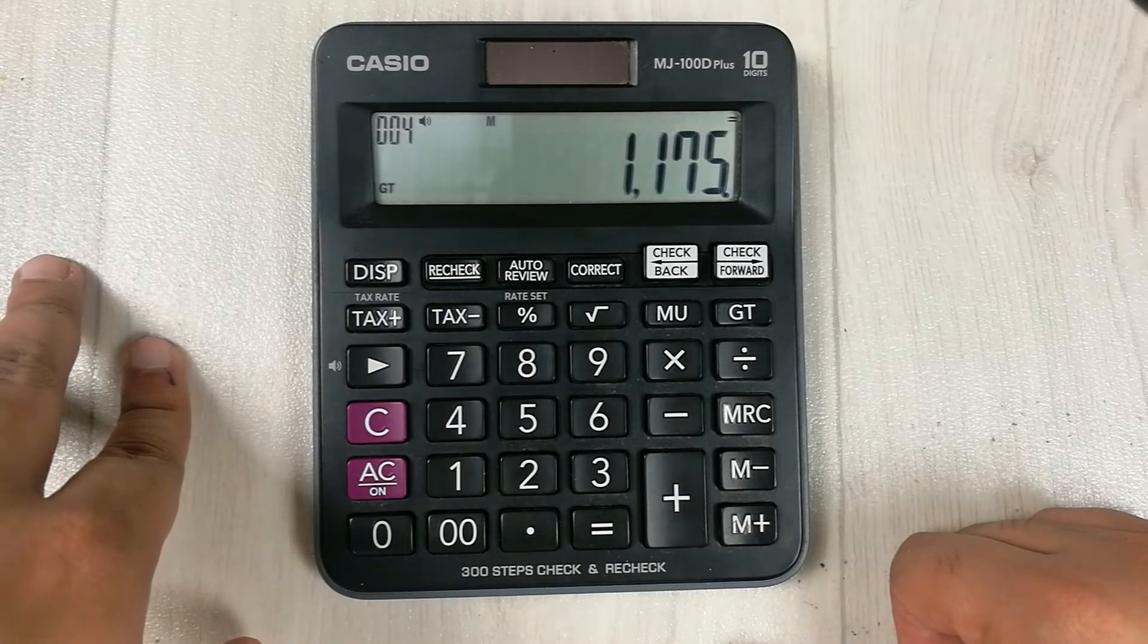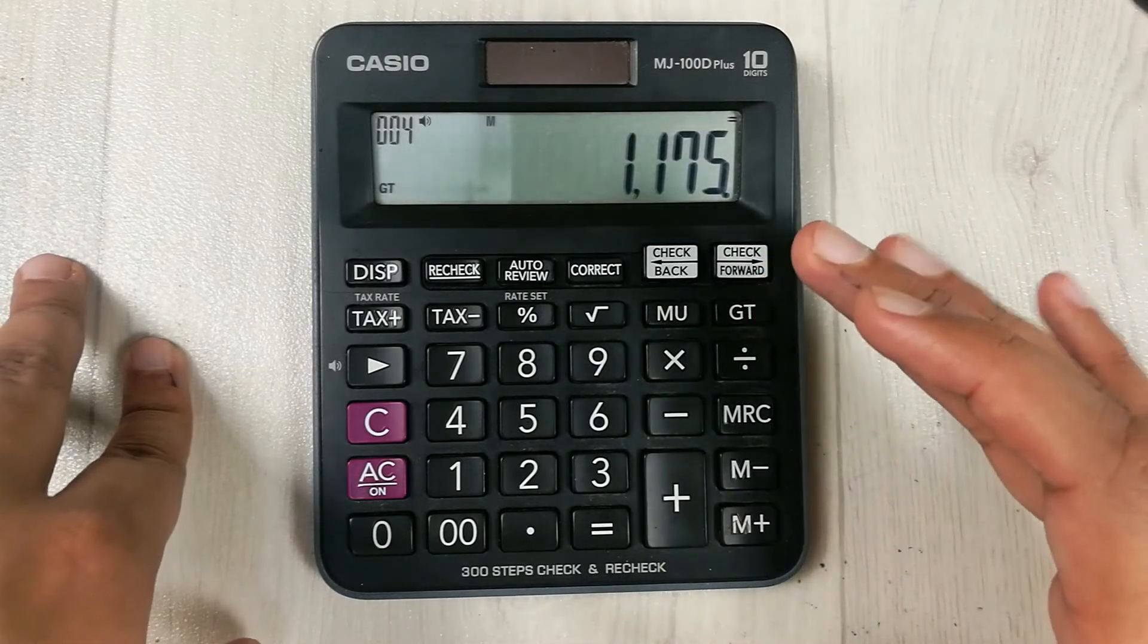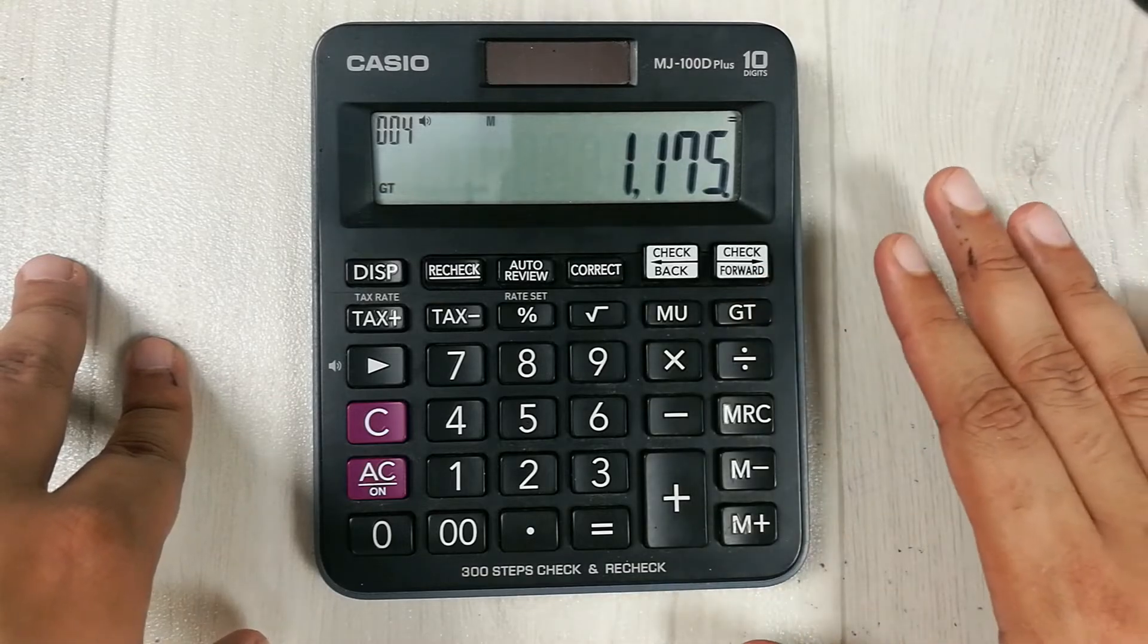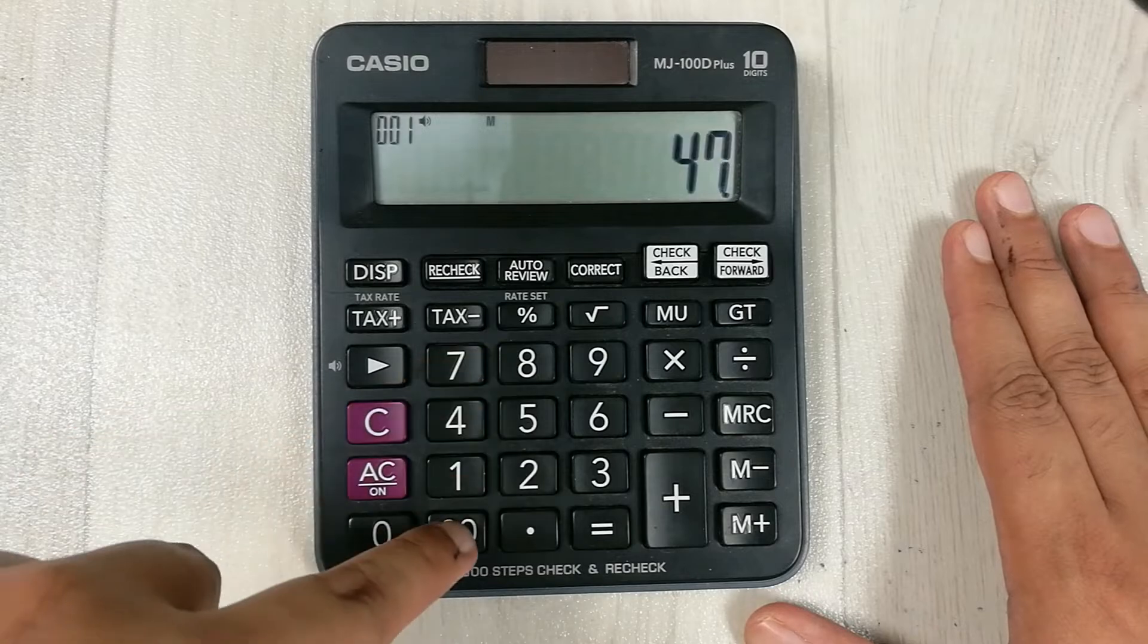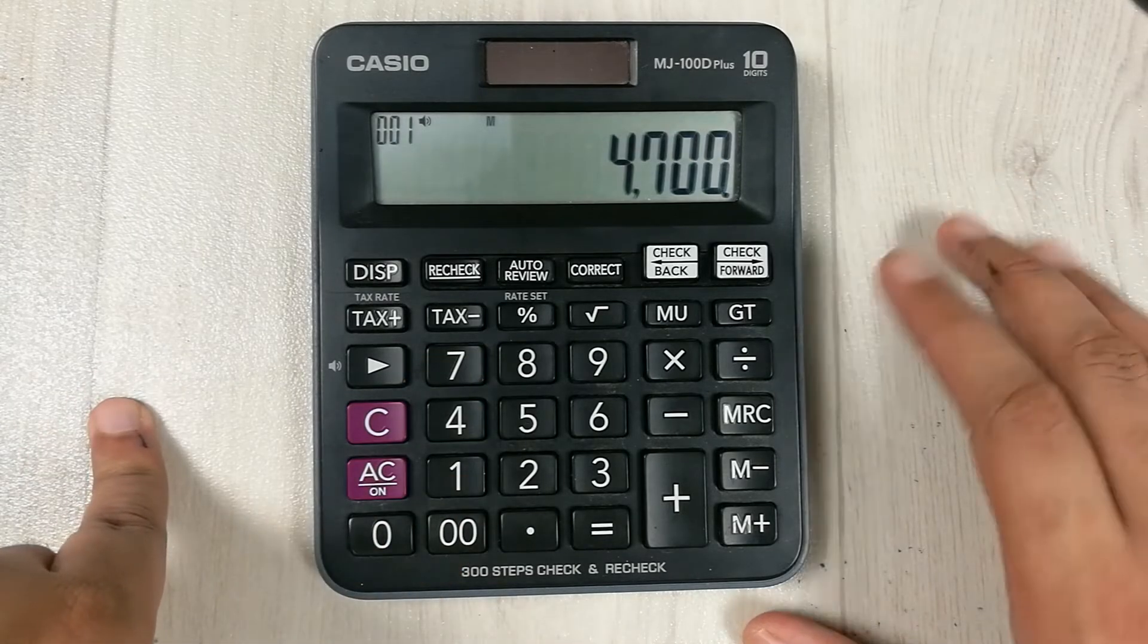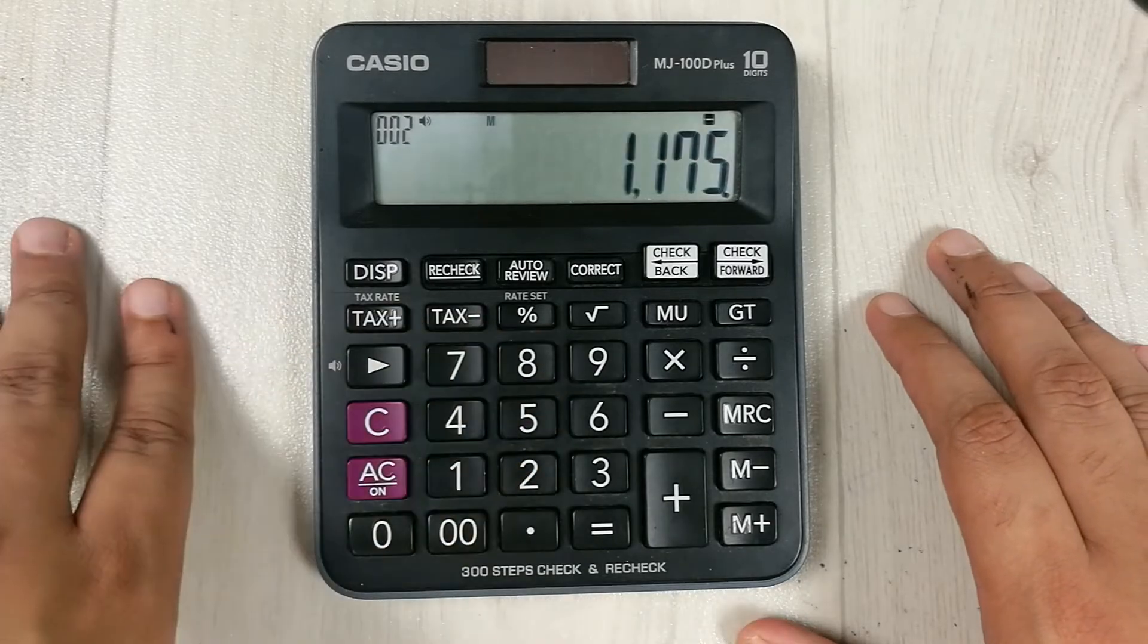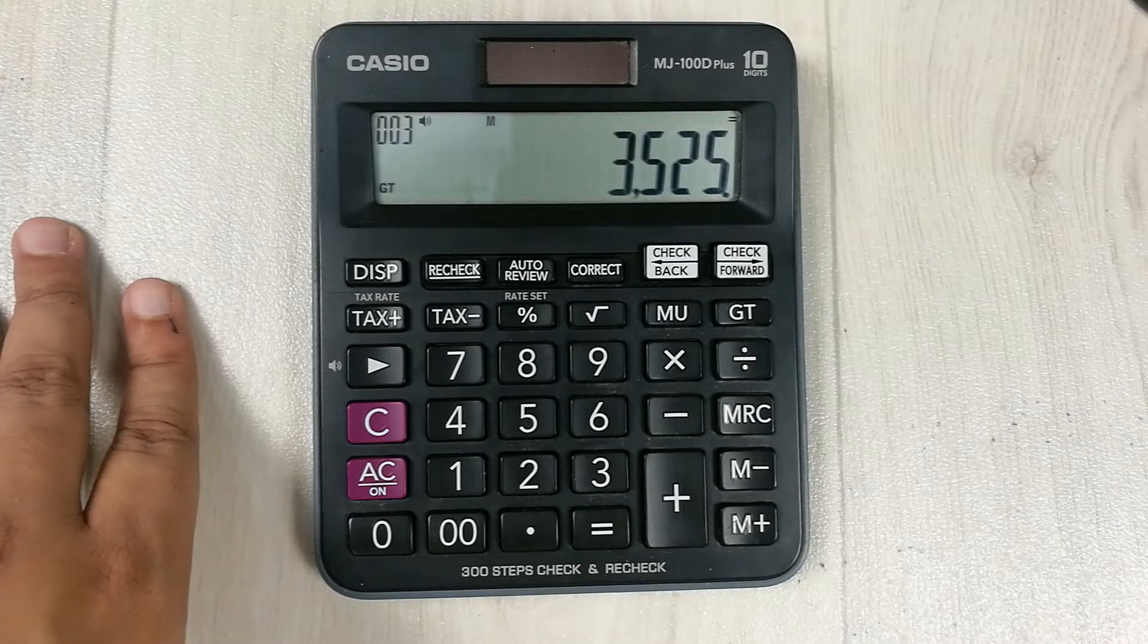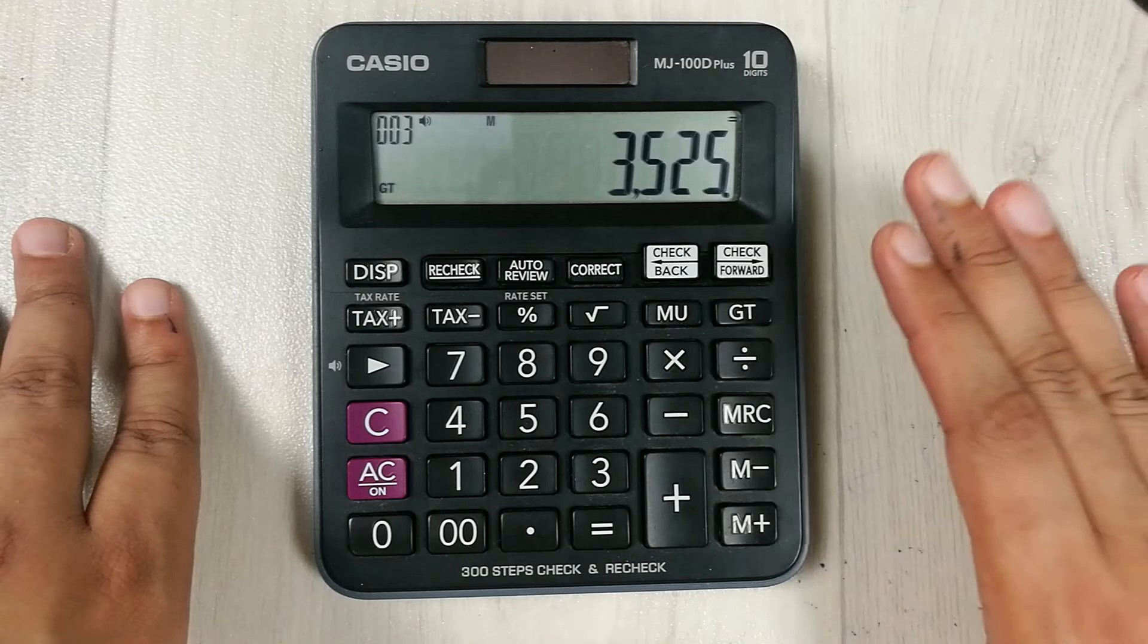Now we subtract this, we minus this 1,175 from 4,700. So what we will do is we type here 4,700 and then we minus it with 1,175 and then we press equal button.